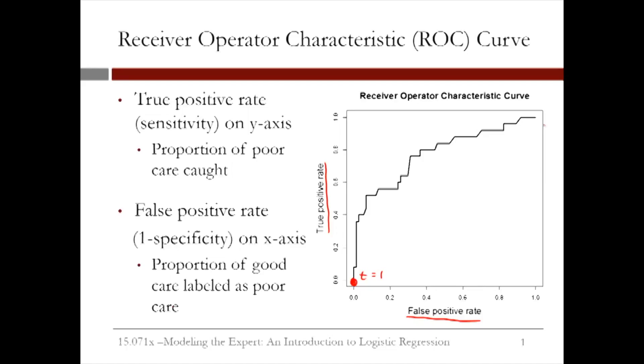The ROC curve always ends at the point (1, 1), which corresponds to a threshold value of 0. If you have a threshold of 0, you'll catch all of the poor care cases, or have a sensitivity of 1.